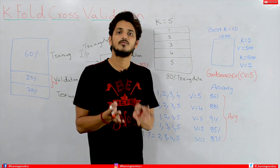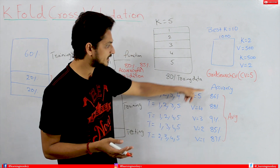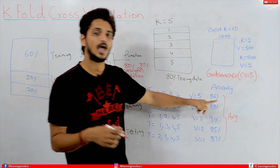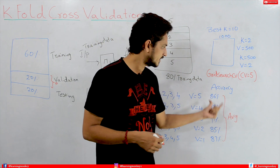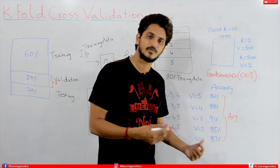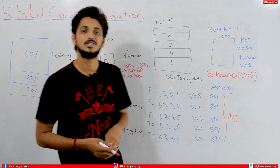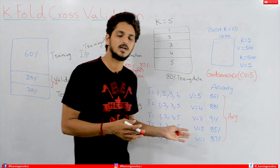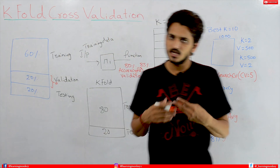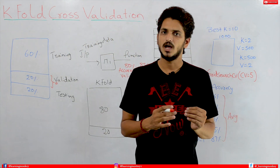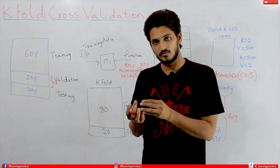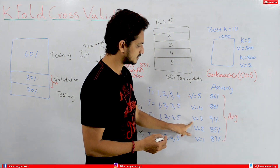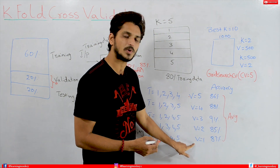This is what K-fold cross validation is. We record the accuracies from each of the 5 iterations and take the average accuracy across all of them. In K-fold cross validation, we are using each and every data point for training, and also each and every data point for validation — in turn the fifth part, then the fourth, third, second, and first.